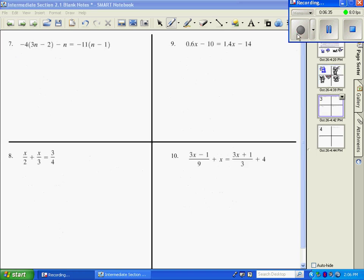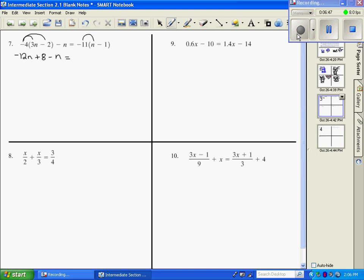Alright. Number 7. The first thing we want to do is distribute. So you get negative 12n plus 8. Because a negative times a negative is a positive. And then I have minus n equals distribute here. Negative 11n plus 11. I want to look on my equal sign. Equal sign on the left, I can add like terms. So that becomes negative 13n plus 8. I need to simplify before I start solving. And the right hand side is already simplified.